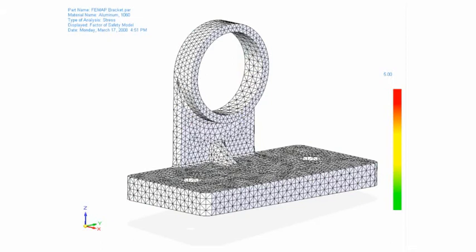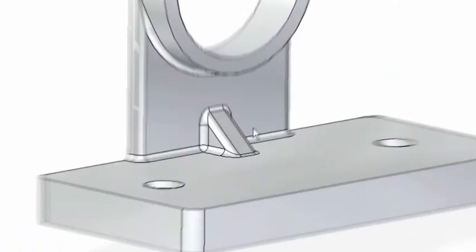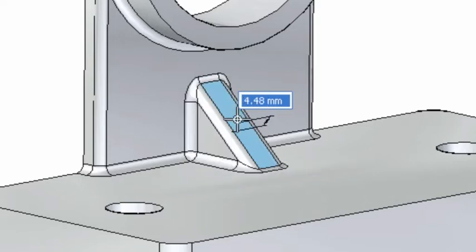Making the rib taller will strengthen the part. Throughout these changes, blends are maintained and key features such as the rib stays symmetric.